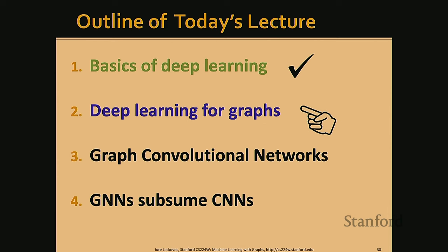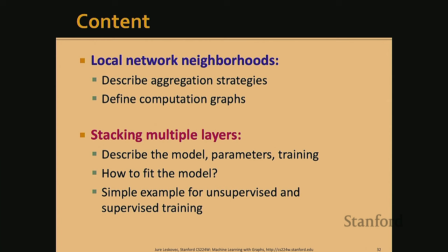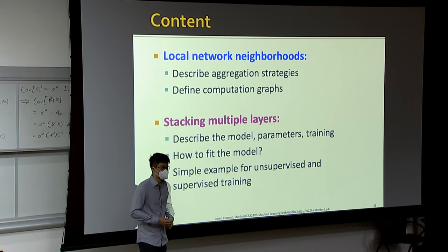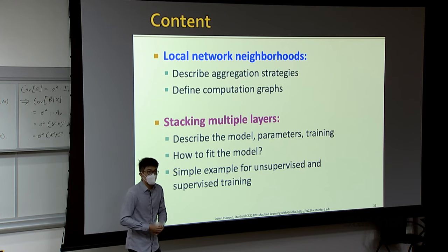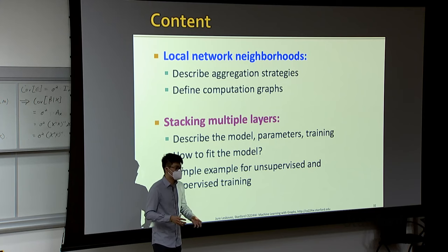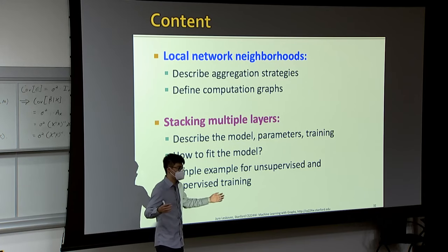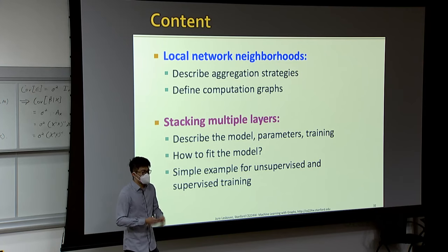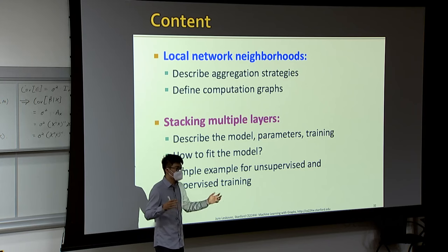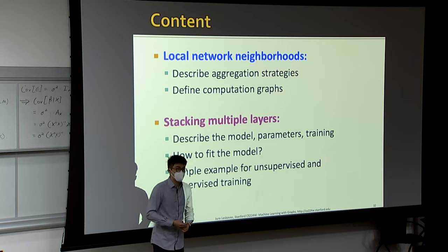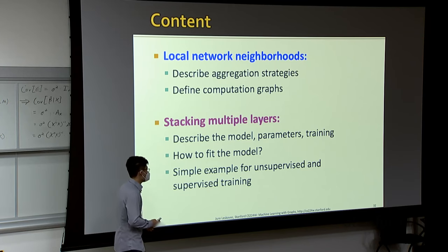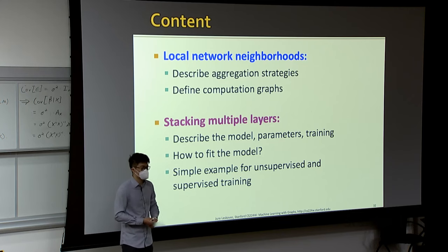Now let's jump into deep learning for graphs. Our plan has two major steps: first, consider the local network structure by defining the aggregation function, which summarizes information about a node's local neighborhood; second, define the concrete computational graph. Then we'll specify a concrete architecture with multiple layers and discuss how to train the model under both unsupervised and supervised settings.